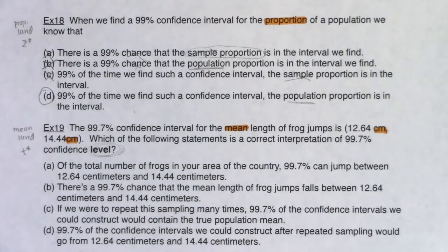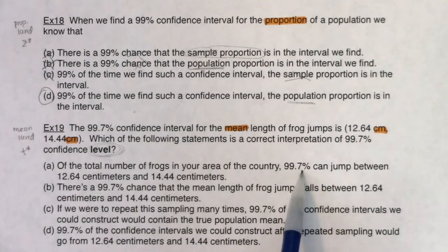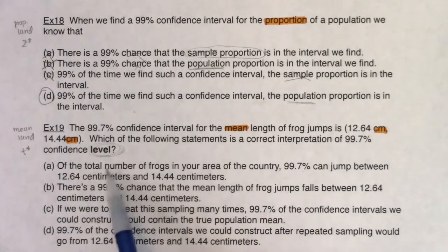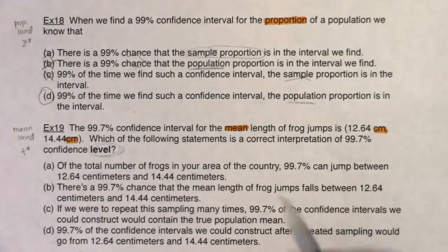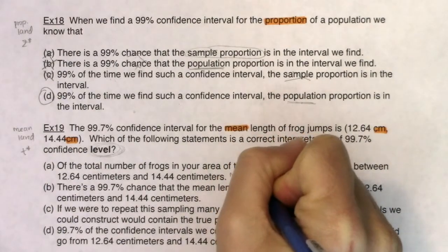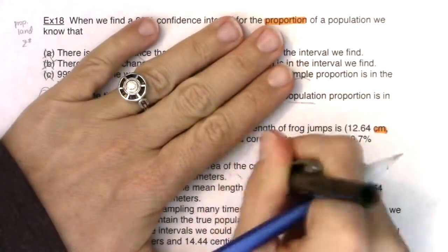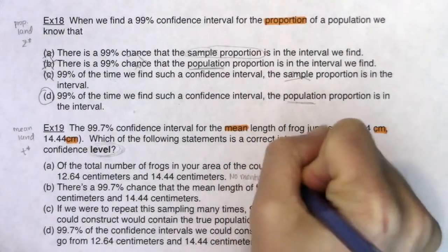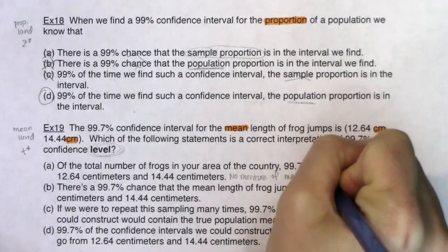Let's narrow this down. Option A says: of the total number of frogs in your area of the country, 99.7% can jump between 12.64 centimeters and 14.44 centimeters. None of this is correct — we're not talking about how far individual frogs can jump out of the total population. We're talking about where the average frog jump length is. There's not even a mention of the word 'average,' so I'll note: no mention of mean frog jump length.